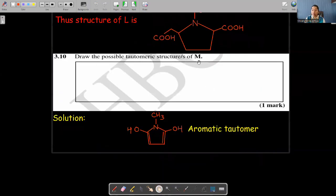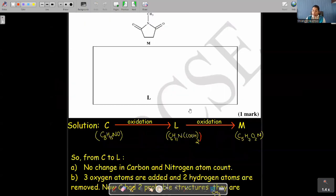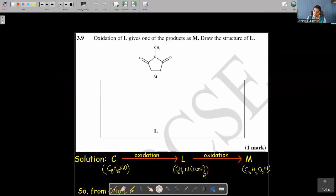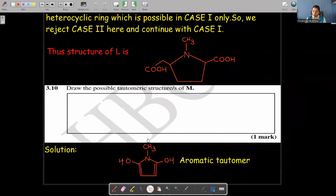Now the question is, draw the possible tautomeric structure of M. M is already given in the previous question and the structure is like this. So if this is the structure, these two ketos, if undergo enolization, then the ring will become aromatic and this is the structure formed by tautomerization. This is an aromatic tautomer. So definitely its contribution will be very high and the structure is this written in red on your screens.